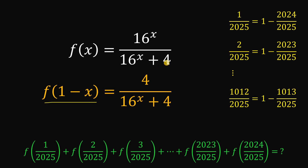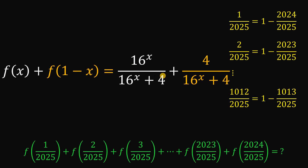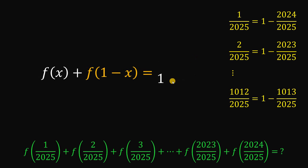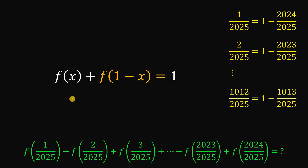Notice that f of x and f of 1 minus x have the same denominator, 16 raised to the power of x plus 4. So let's combine these two functions. Adding them gives 16 raised to the power of x over 16 raised to the power of x plus 4, plus 4 over 16 raised to the power of x plus 4. Since they share the same denominator, the numerator becomes 16 raised to the power of x plus 4, which equals the denominator, so the result is 1. Therefore f of x plus f of 1 minus x equals 1.